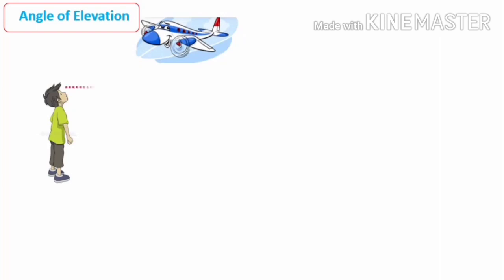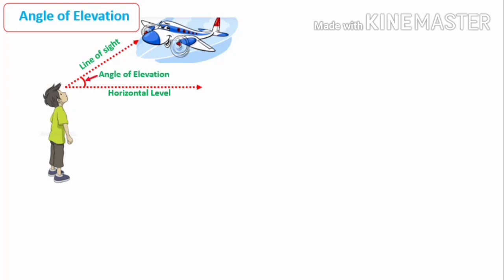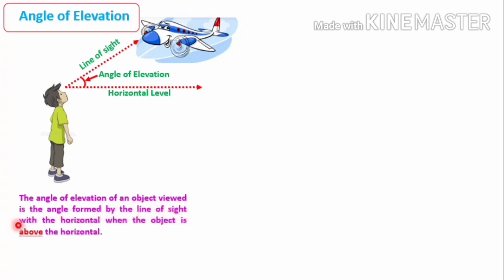The next term is angle of elevation. If we want to observe an object above our head, we must raise our head. For example, a boy standing on the ground observes an aeroplane flying in the sky. The horizontal level is parallel to the ground passing through the eye of the observer, and the line of sight connects the eye to the object. The angle of elevation is the angle between the horizontal level and the line of sight when the object is above the horizontal — that is, above our eye level.